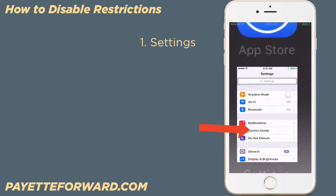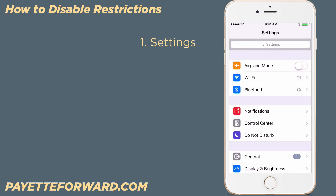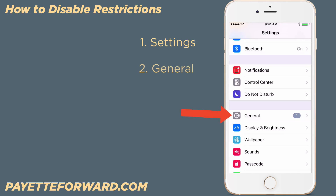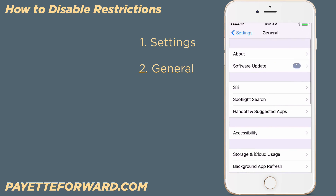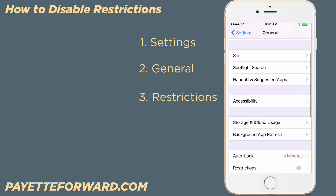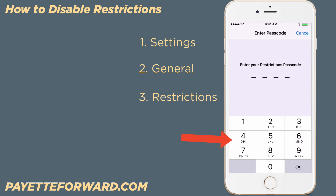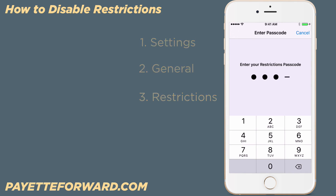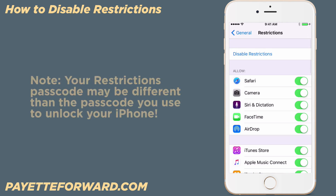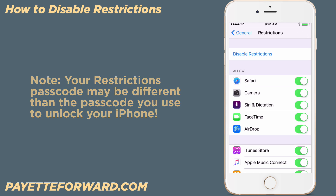Go to Settings, General, Restrictions, and enter the restrictions passcode that was entered on your iPhone when you first enabled restrictions. Note that this passcode may be different from the passcode lock you usually use to unlock your phone.